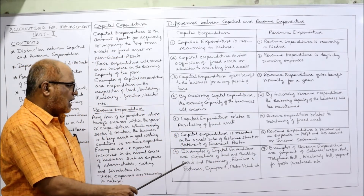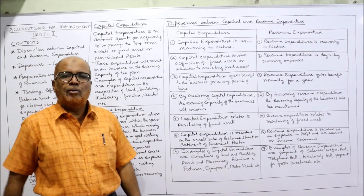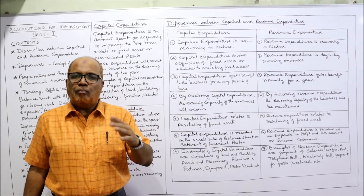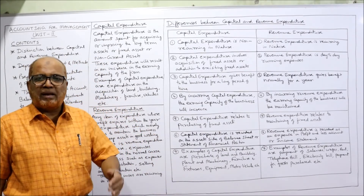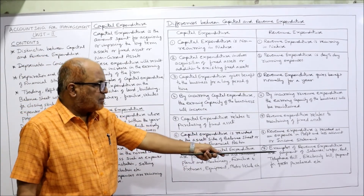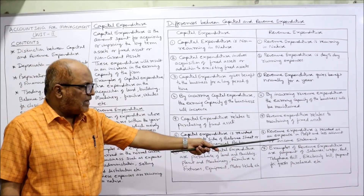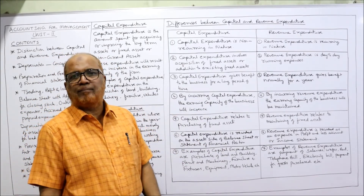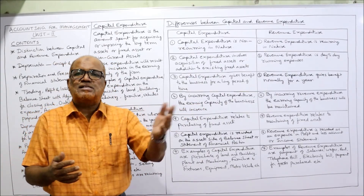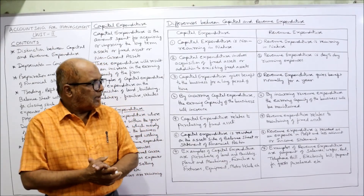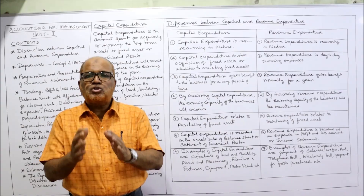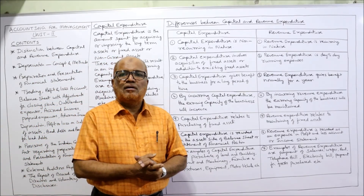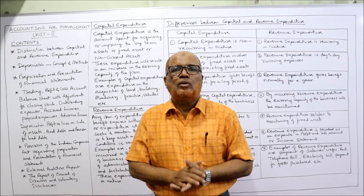Seventh: examples of capital expenditure are purchase of land, building, plant and machinery, furniture, fixtures, motor vehicles, and equipment — all of whose benefits accrue for a long period. Examples of revenue expenditure are payment of salaries, wages, rent, telephone bill, electricity bill, and payment for goods purchased for resale. I have explained seven points showing the differences. Watch this video two or three times and you'll retain all points for the examination.